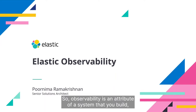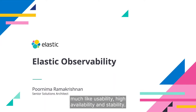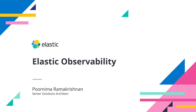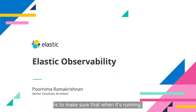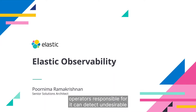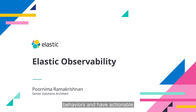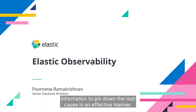Observability is an attribute of a system that you build, much like usability, high availability, and stability. The goal of designing and building an observable system is to make sure that when it's running, operators responsible for it can detect undesirable behaviors and have actionable information to pin down the root cause in an effective manner.